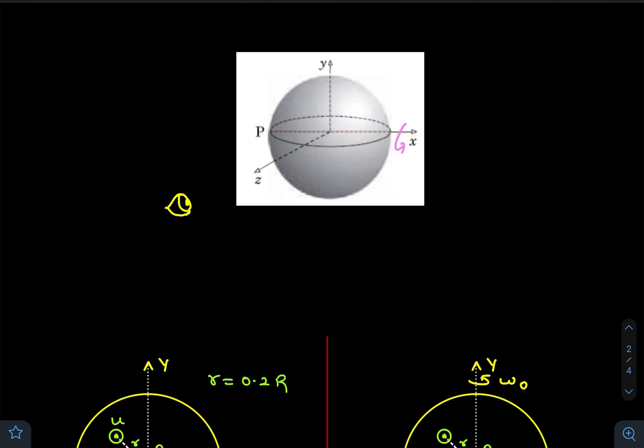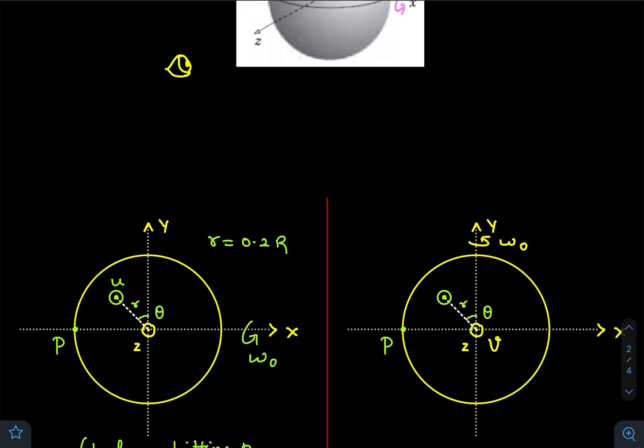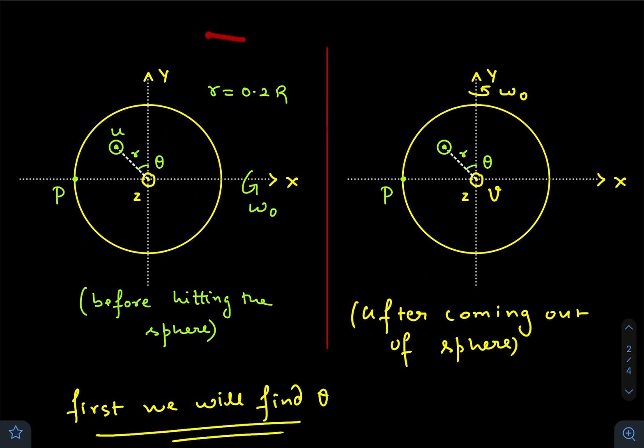Now I am observing the same figure while keeping my eye in such a way that the z-axis points towards my eye. So the diagram would look something like this in the 2D plane.